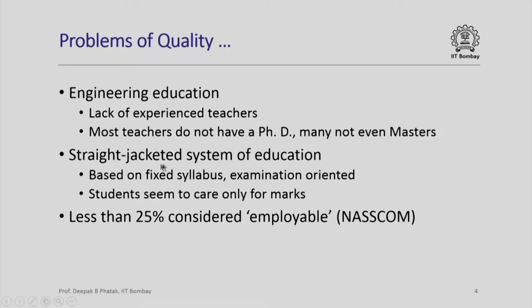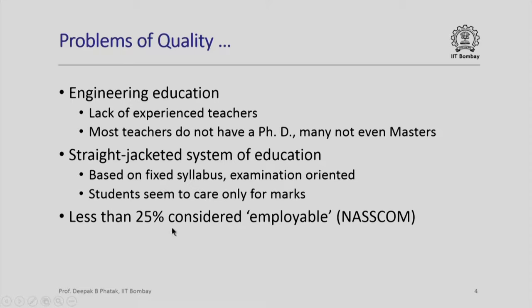We have a straight-jacketed system of education based on a fixed syllabus and examination orientation. Students seem to care only for marks. When we had only 100 engineering colleges, we had really good quality teachers and an academic ethos. With 5,000 engineering colleges, it is extremely difficult to maintain that, and we need to train not only our students but also our teachers. NASSCOM considers that less than 25 percent of our graduating students are employable — that is a very poor rate — and we need to do something about enhancing the quality of engineering education.